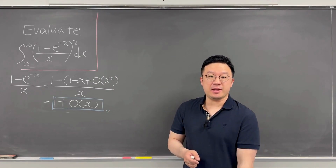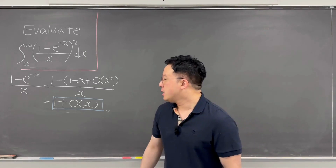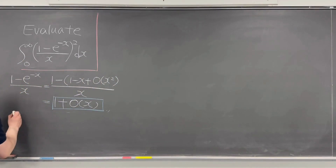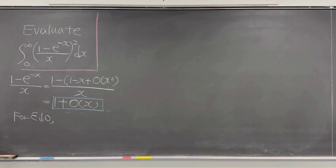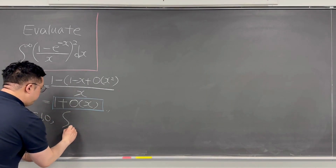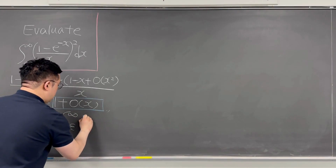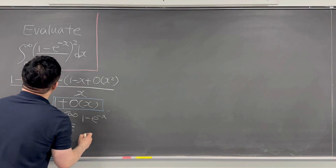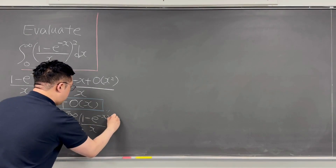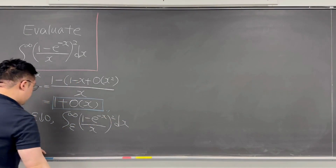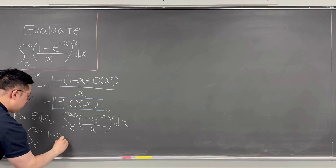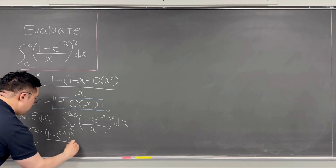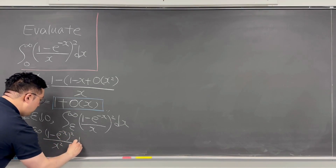At the same time, we will be using integration by parts, and we need to be careful. For epsilon going to zero, what we need to consider is this integral from epsilon to infinity of (1 minus e to the power of negative x) over x, squared, dx.